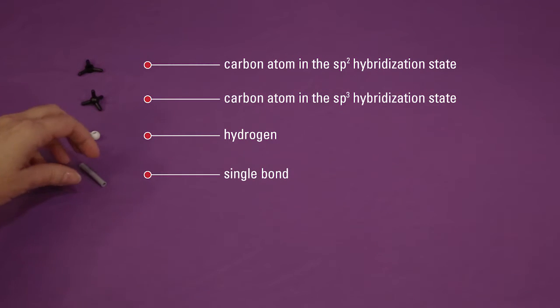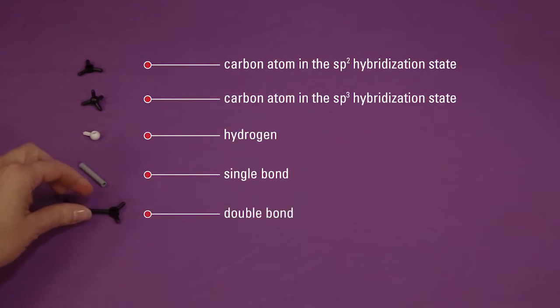The gray hollow link represents a single bond. Two sp2 carbon atoms and a double bond are already connected and are called a double bond.